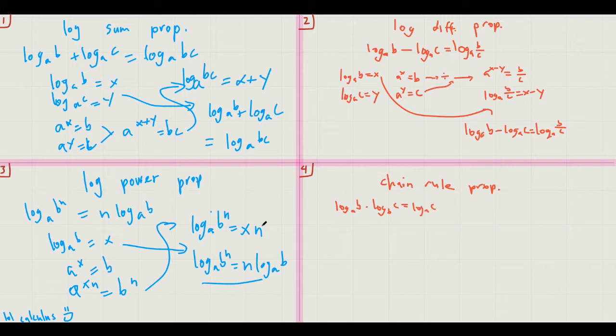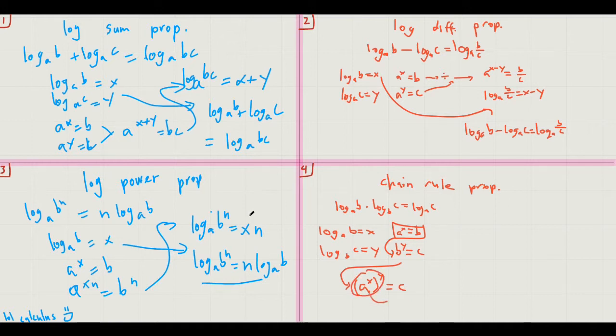So, this property states that logarithm base a of b times log base b of c equals log base a of c. And you can kind of see how this chain rule works because, like, you can see, like, the b's kind of cancel out. But we have to prove this rigorously. So, let's start by letting log base a of b equal x and log base b of c equal y. So, this means that a to the power of x equals b. b to the power of y equals c. Now, if we substitute this equation into this b here, then we get a to the power of x to the power of y equals c. And if you recall from your simple exponent properties that this a to the power of x to the power of y is equal to a to the power of x times y. And this equals c.